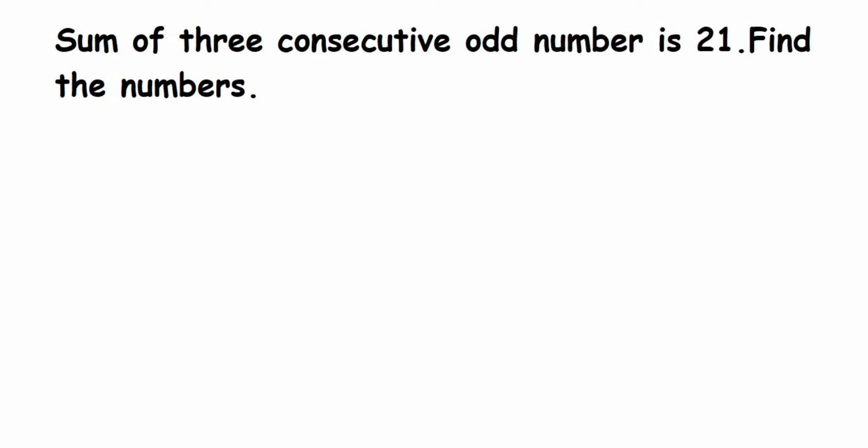Hey everyone, here's a question: the sum of three consecutive odd numbers is 21, find the numbers. Before we begin, let us understand what we mean by consecutive. Consecutive means numbers which come one after the other, immediate numbers.